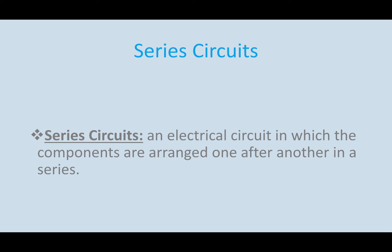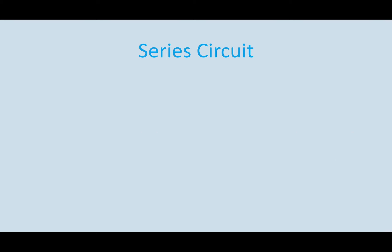Starting with a series circuit, a series circuit is an electrical circuit in which the components are arranged one after another in a series. It's going to be quite clear how a series circuit is different from a parallel circuit. In a series circuit, it only has one path along which electrons can travel. There's only one pathway that electrons can travel, there's no other pathway.